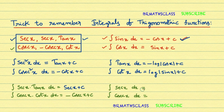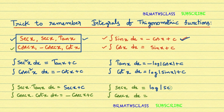Integral of sec x dx starts with log. You observe the box: secant x, secant x, tan x. One secant x is already in the integral, so you add the remaining terms: secant x plus tan x. Therefore, integral of sec x dx is log |sec x + tan x| + c.